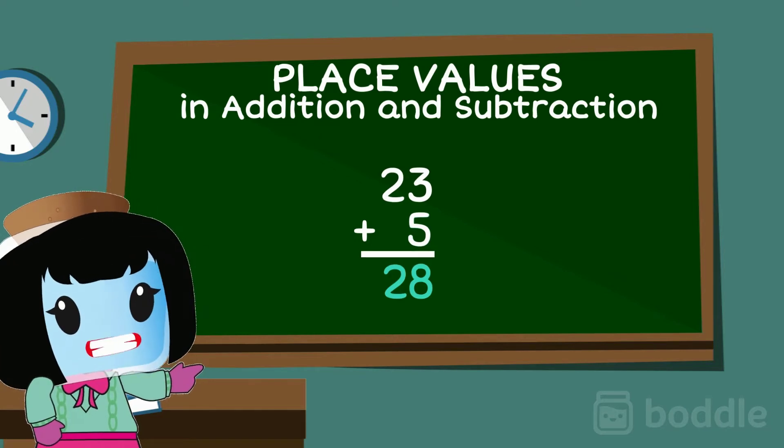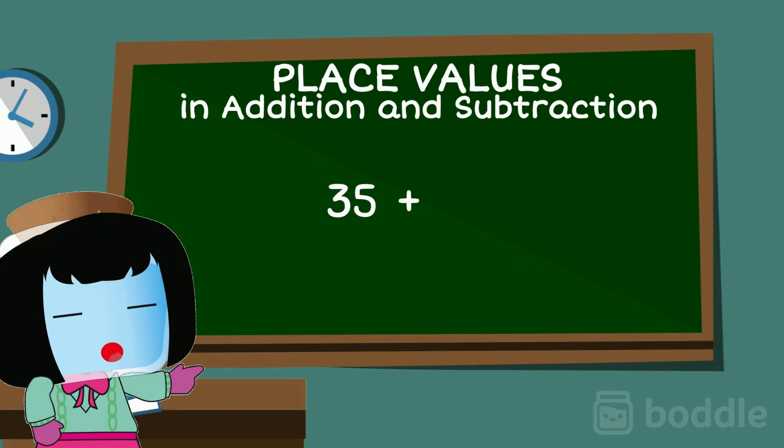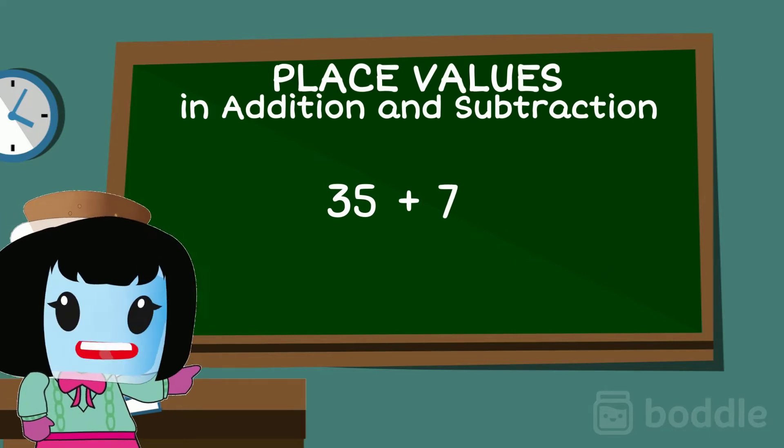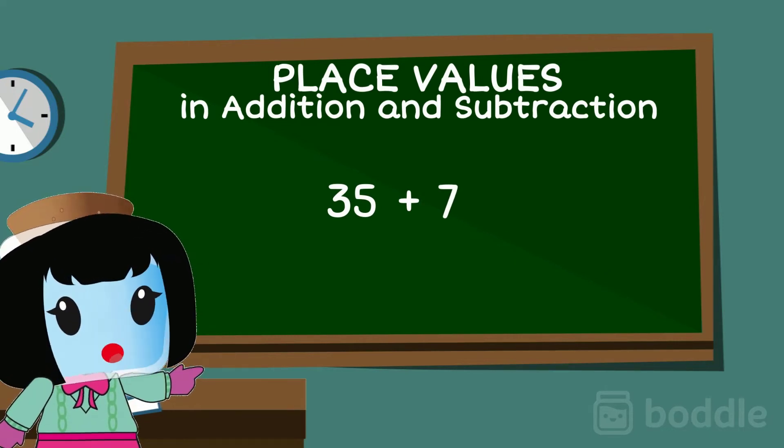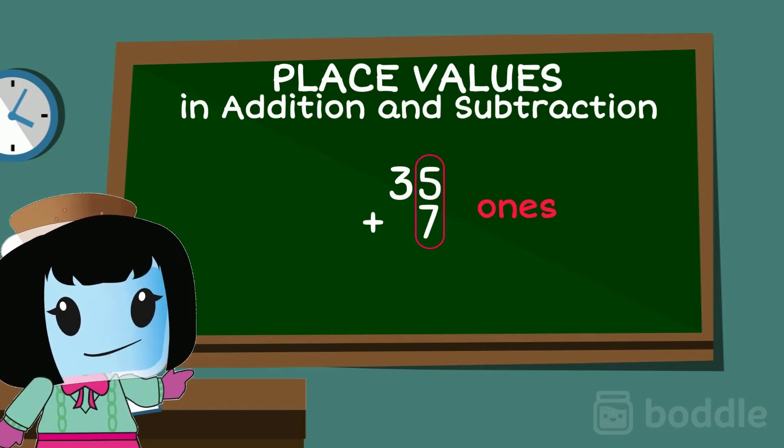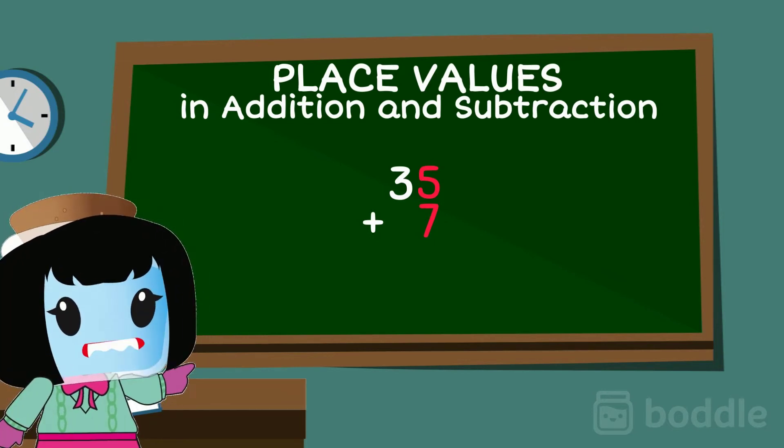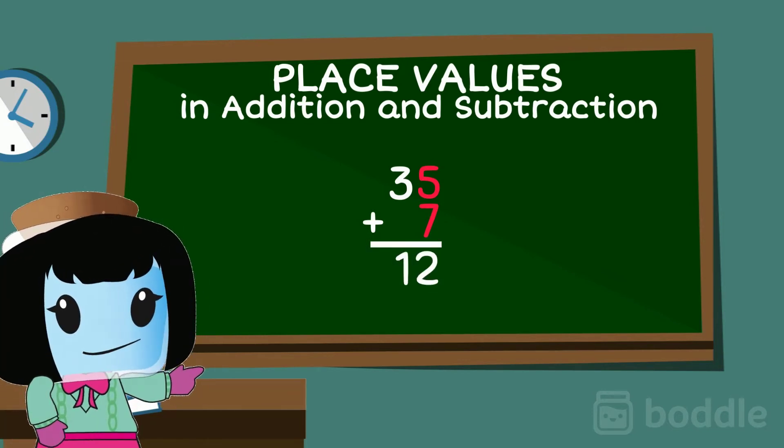Let's try another one. Add 35 plus 7. Again, write the numbers in a column. Start by adding the ones. Can you guess what 5 plus 7? That's right, it's 12.